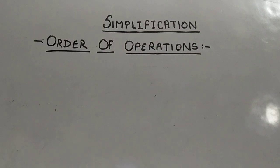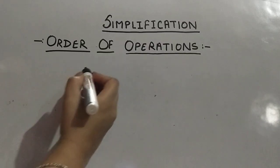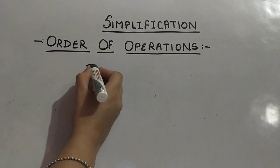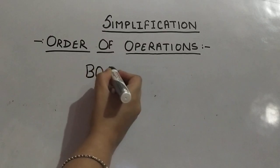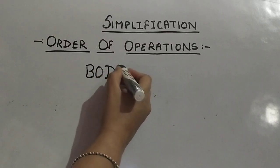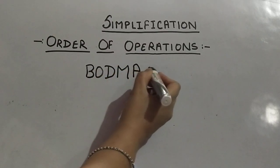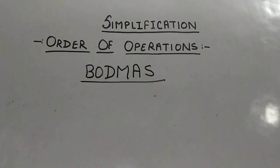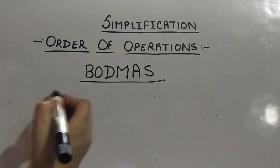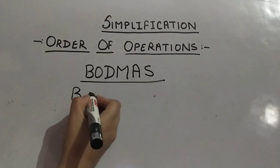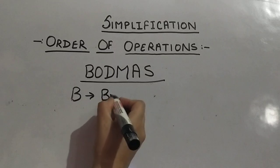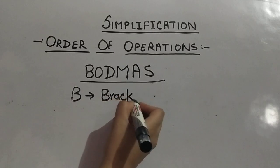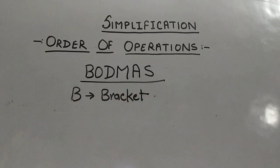This order of operations is called BODMAS. B-O-D-M-A-S, BODMAS. Let us see what BODMAS means. B stands for Bracket. Brackets are also of three types.